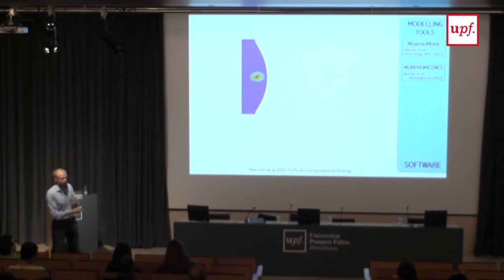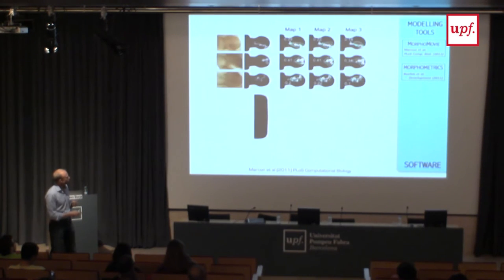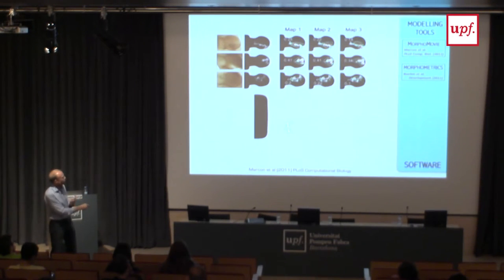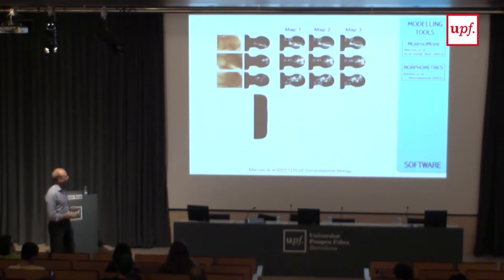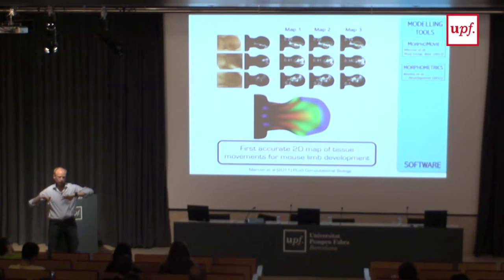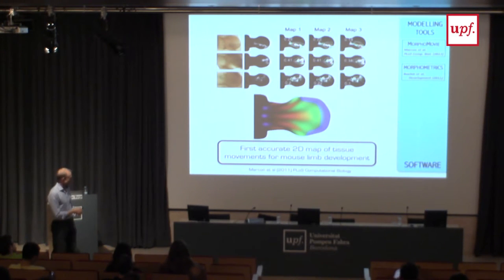Starting from shape outlines, we can make simple two-dimensional meshes remeshed every hour. If we have a hypothetical distribution of movements, we can label a single point at a certain time point and see the probability distribution of where the descendants of that cell could end up if that map were correct. We then created many different hypothetical maps of how the tissue moves and compared them to real clonal data - digitizing all the clones and comparing every map with every clone, looking for the best fit. The best fit allowed us to produce what we think was the first accurate description in 2D of these movements over time for the mouse limb bud - all from dead, fixed, static data.